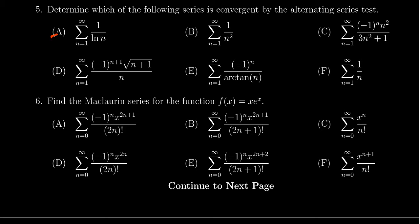That rules out very quickly choices A, B, and F, which are not alternating series. You don't see this negative 1 to the n or this negative 1 to the n plus 1 that's necessary for alternating series.